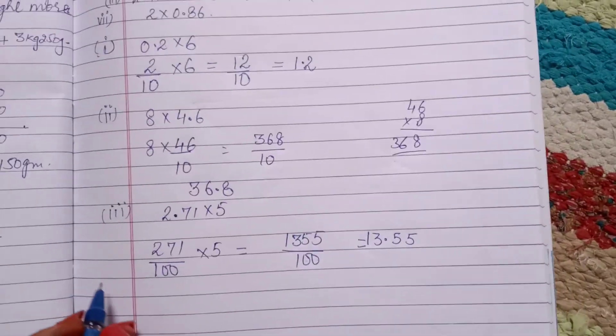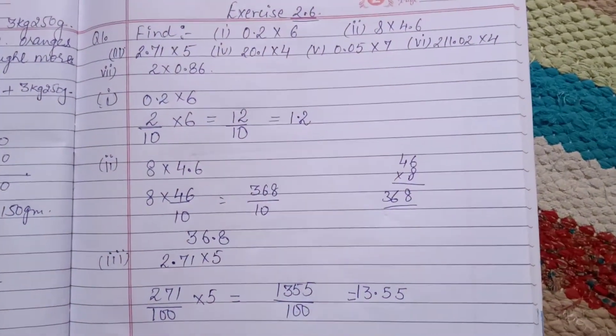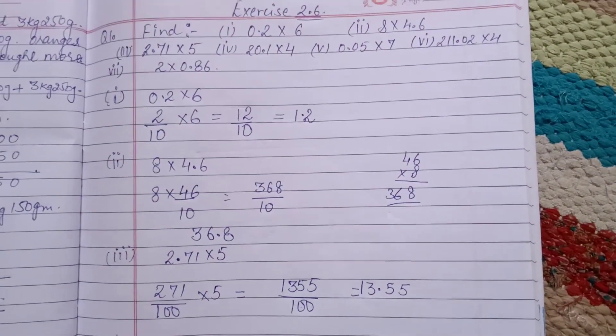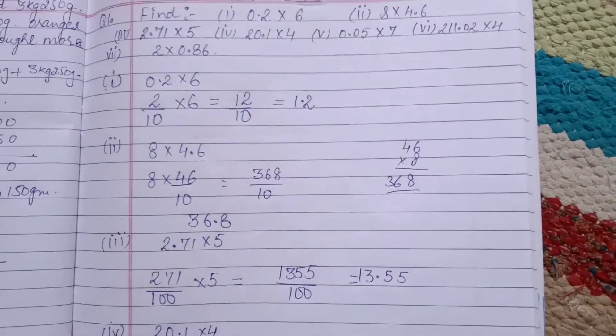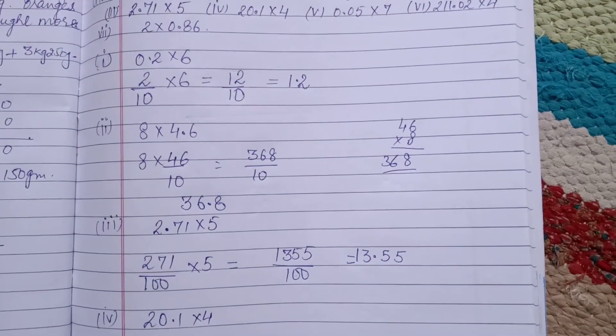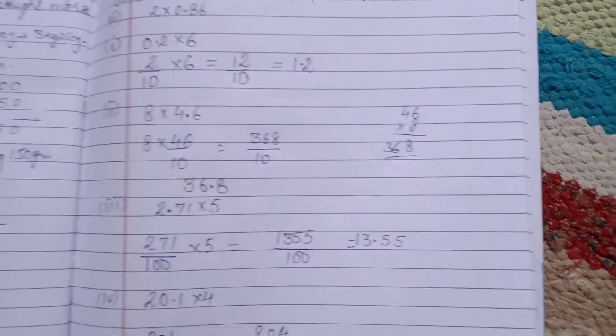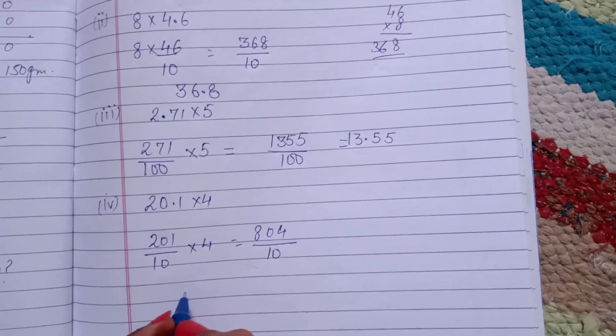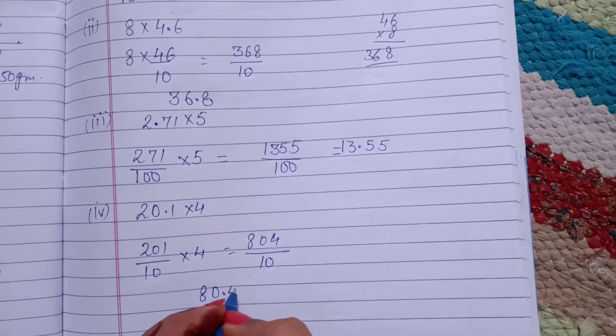Next is the fourth part, 20.1 into 4, means 201 over 10 into 4. Then 4, 0, 8 by 10. Then we convert into decimal form, after one digit, put decimal: 80.4.